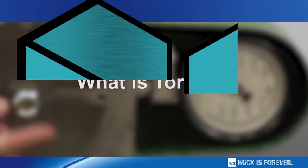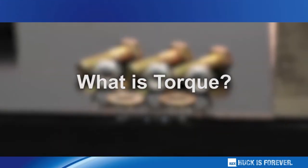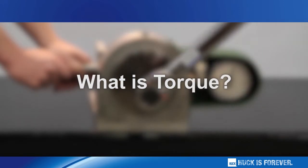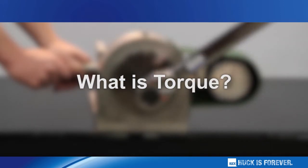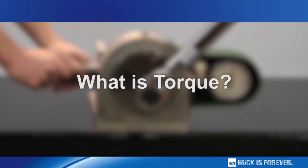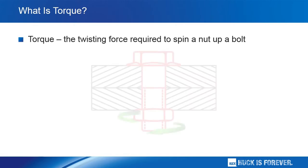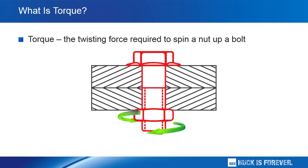The concept of torque is often misunderstood and is mistakenly considered the same as mechanical tension. With that in mind, it is beneficial to begin this presentation by describing exactly what torque is. Torque is actually the twisting force that is required to spin a nut up a bolt — nothing more, nothing less. And as such, torque is only an indirect indication of tension.